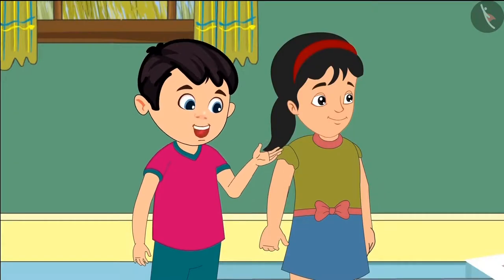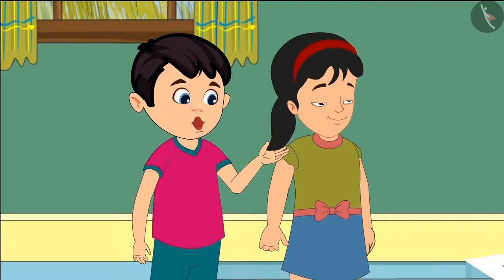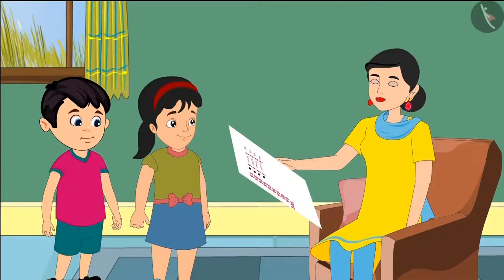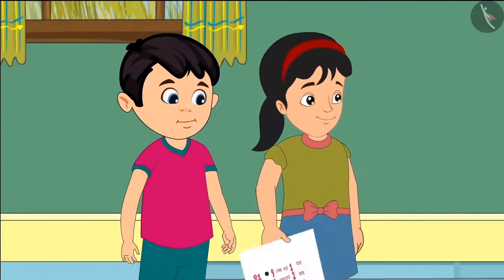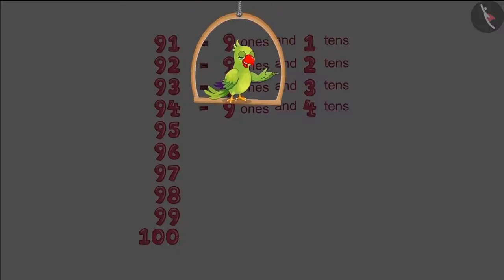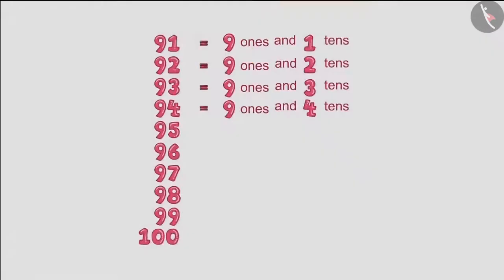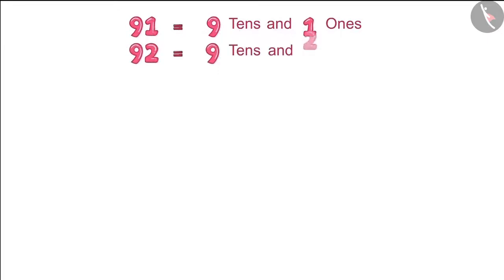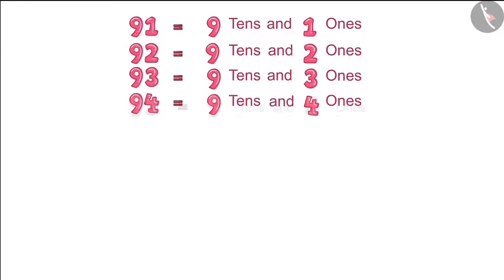Oh yes, we have made this mistake in all the numbers. Take this and just fix it up. Chotu and Pinky then corrected their charts. It is written here that there are nine tens and one ones in 91. Then there are nine tens and two ones in 92.